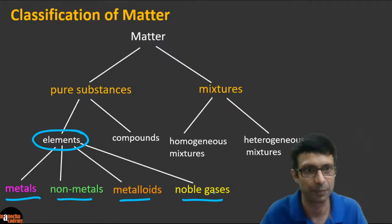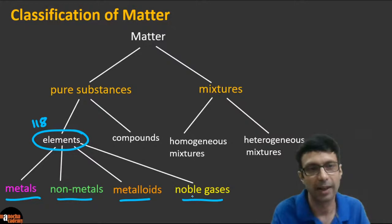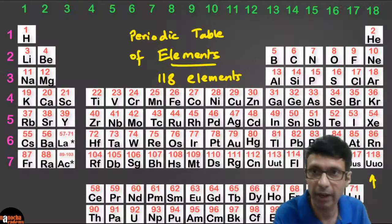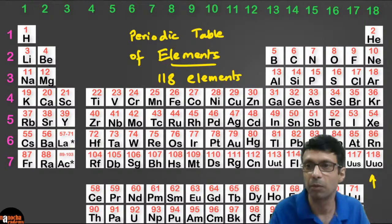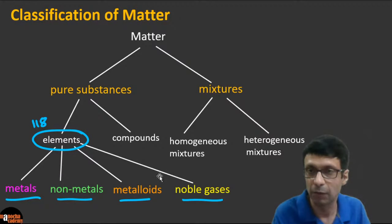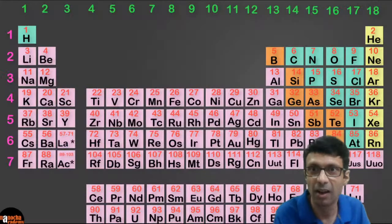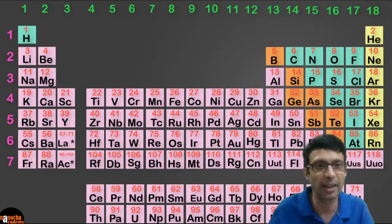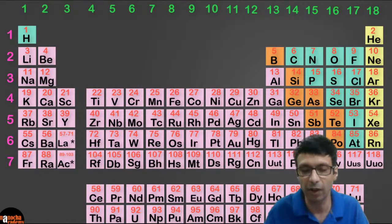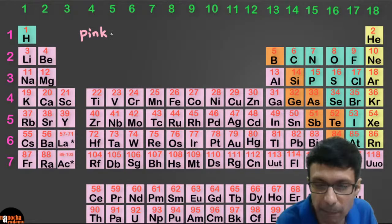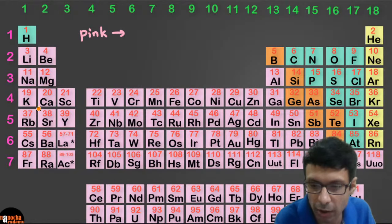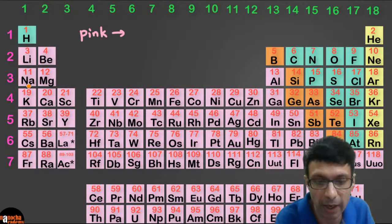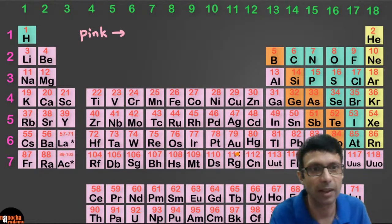All 118 elements can be divided into these four categories. If you color the periodic table — the pink elements are metals. You can see magnesium, iron, cobalt, nickel, copper, potassium, sodium — the pink boxes are all metals.